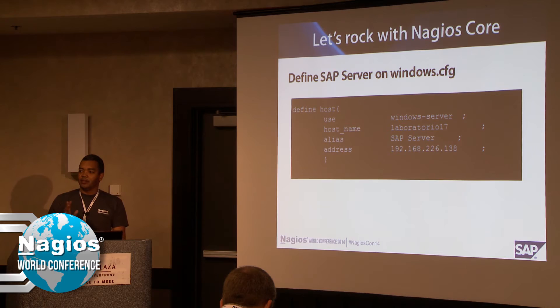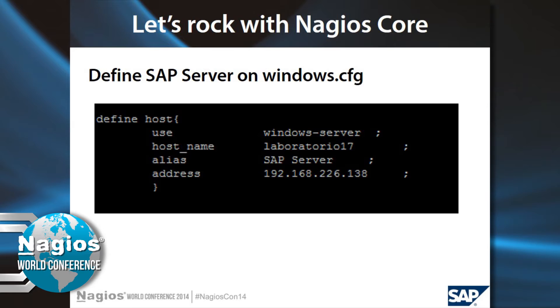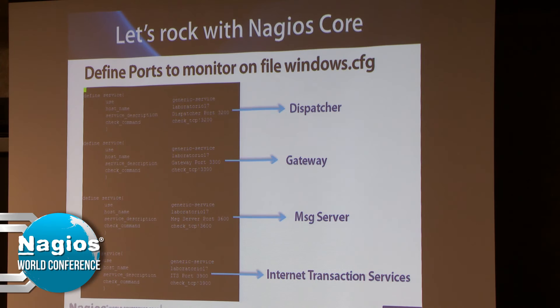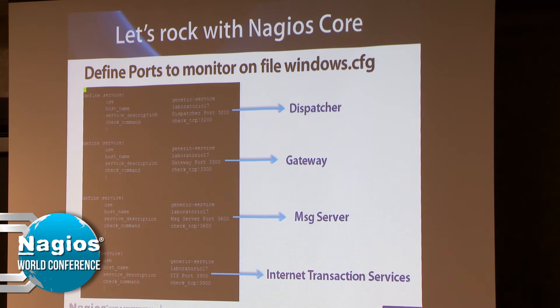This is the simple approach — using plain text configuration files in Nagios rather than SQL. I define my SAP server in a simple way. As an SAP basis administrator, I've identified the ports I need to monitor. For example, port 3200 is for the dispatcher, port 3300 is the gateway port, port 33 is the message server, and port 39 is the internet transaction server. This is for a simple system — other configurations like business intelligence would include additional ports.